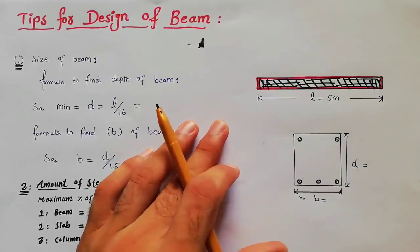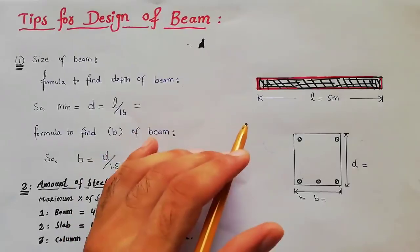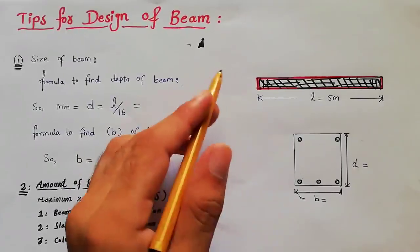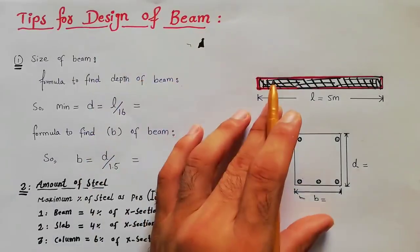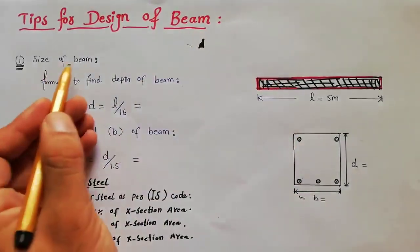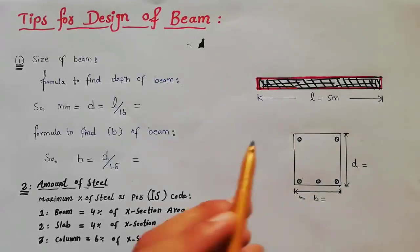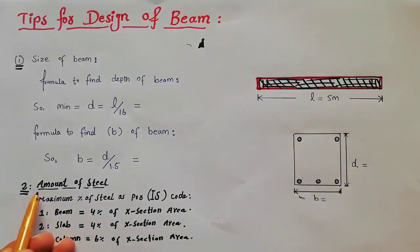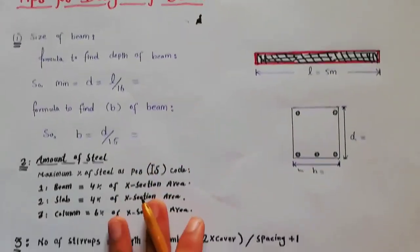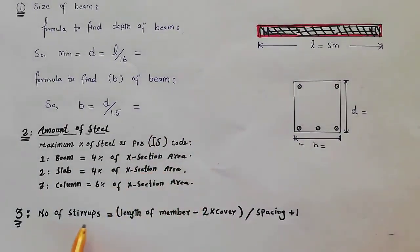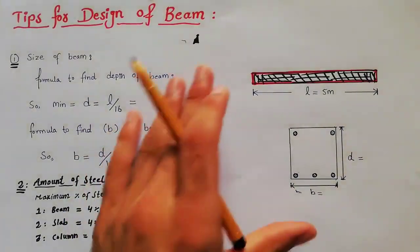Assalamualaikum friends, welcome back to Civil Engineers YouTube channel. In this video lecture we are going to discuss tips for design of RCC beam. You will learn how to find the size of beam — depth and breadth — the amount of steel for different RCC structures, and the number of stirrups in a beam.